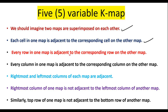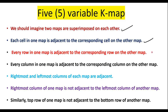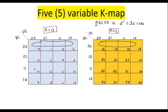Every row in one map is adjacent to the corresponding row on the other map. For example, the row containing 0, 1, 2, 3 is adjacent to the corresponding row on the other map. Similarly, every column in one map is adjacent to the corresponding column on the other map — that is, the first column of this map is adjacent to the first column of the other map, the second column is adjacent to the second column, and so on.